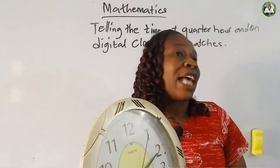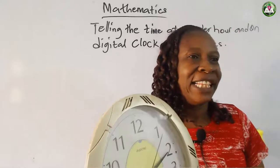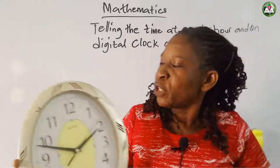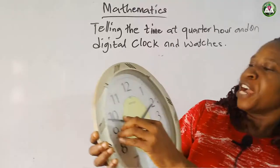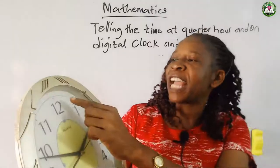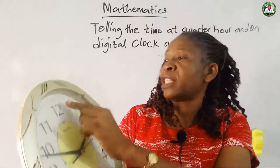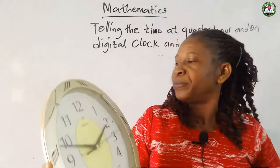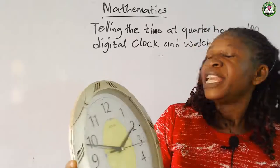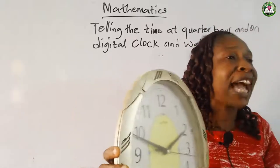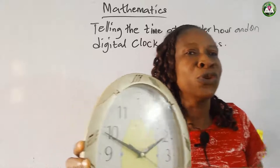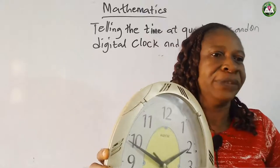We were told that if this long hand is resting at twelve and the short one is resting at two, it is now two o'clock.